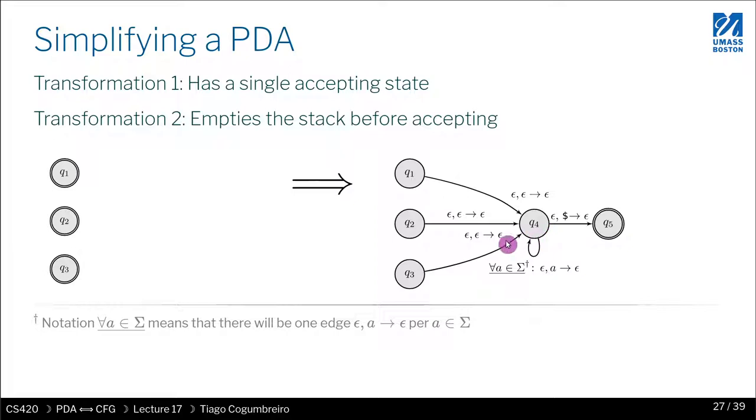Let's call it Q4. And we connect the original accepting states to this new state, all with epsilon transitions.